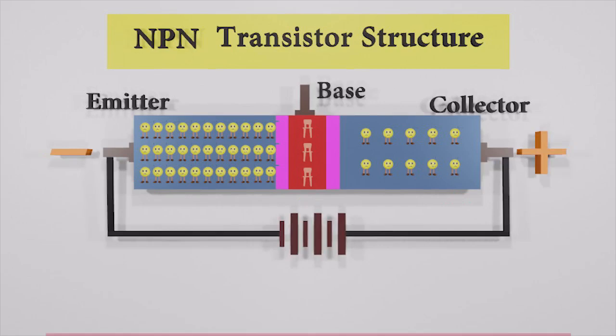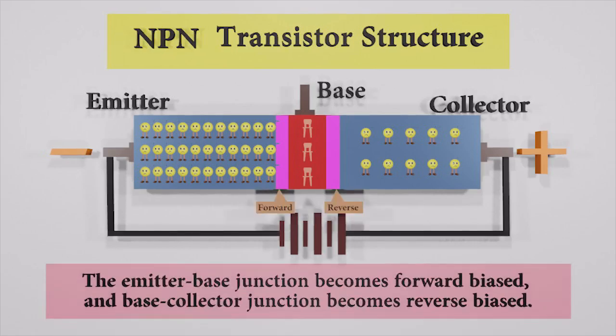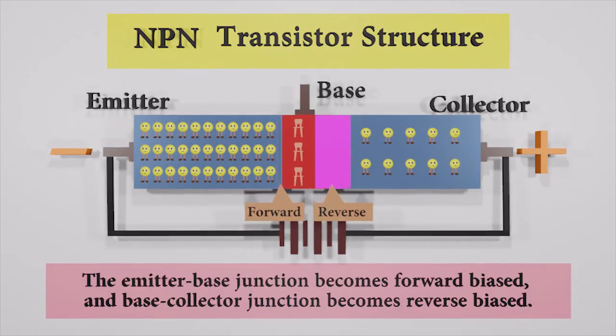Now we connect a battery in between emitter and collector. The emitter terminal of the transistor is connected to the negative terminal of the battery. Hence, the emitter-base junction becomes forward biased. The base-collector junction becomes reverse biased.